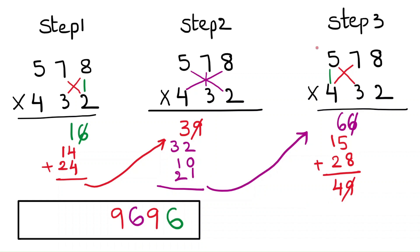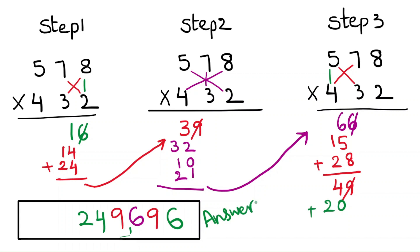Now do the multiplication for the hundreds place: 5 times 4 is 20. The sum is 24 — write it in the final answer. This is the answer. Using this method, within seconds we can find the answer.